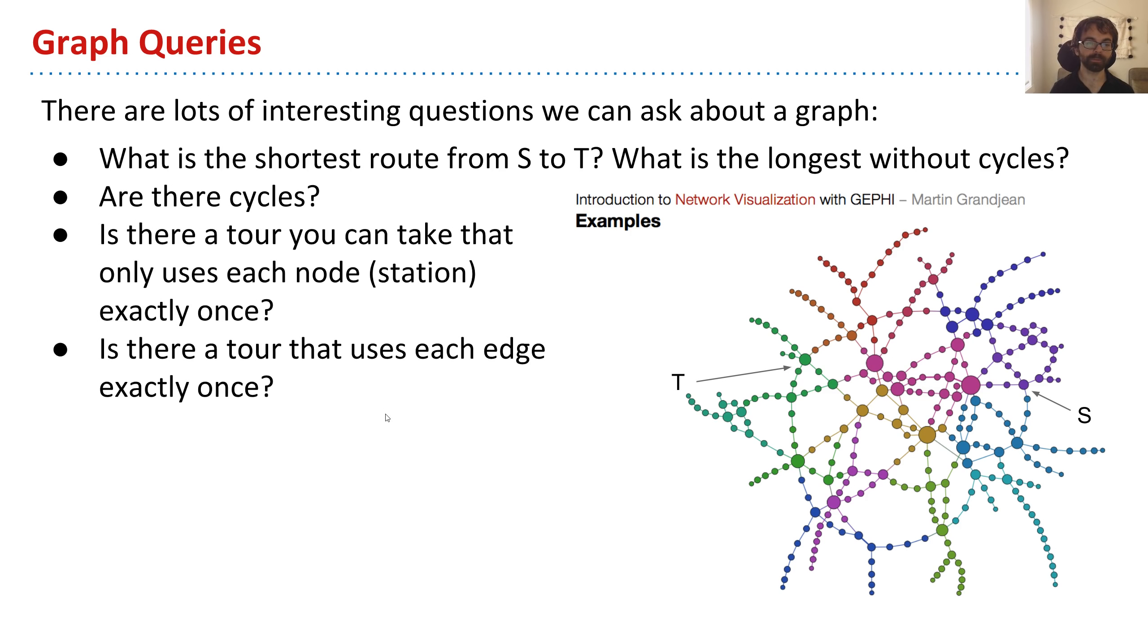Another question you might ask yourself, is there a tour you can take that uses each node only once? For example, can I go from this station to every other using every station only one time? In this graph, it turns out to be impossible.